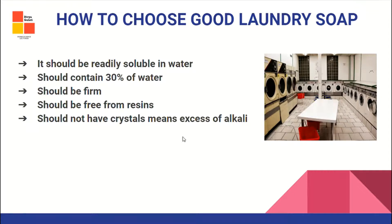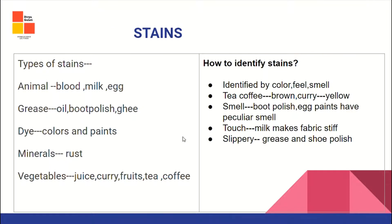To choose a good laundry soap: it should be readily soluble in water, should not contain more than 30% water, should be firm, should be free from resins, and should not have any crystals on it — which would indicate excess alkali.